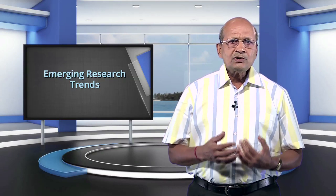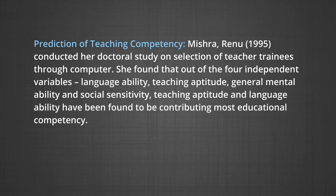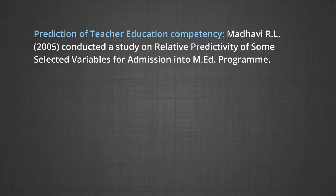Prediction of teaching competency: Mishra Renu in 1995 conducted her doctoral study on selection of teacher trainees through computer. She found that out of the four independent variables — language ability, teaching aptitude, general mental ability and social sensitivity — teaching aptitude and language ability have been found to be contributing most to educational competency. The highest contribution is that of teaching aptitude whereas language ability was next. Social sensitivity and general mental ability have been found to be relatively poor predictors.